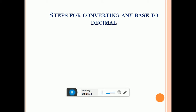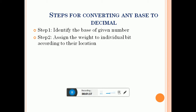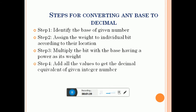Now let us begin by studying the interconversion of number systems. We will learn the steps for converting any base to decimal. Step 1: identify the base of the given number. Step 2: assign the weight to individual bits according to their location. Step 3: multiply the bit with the base having power as its weight. Step 4: add all the values to get the decimal equivalent of the given integer number.